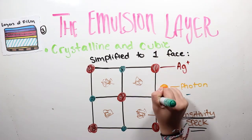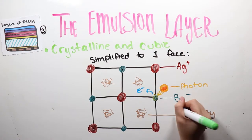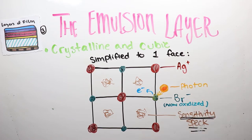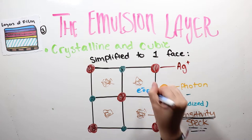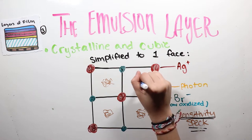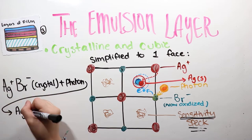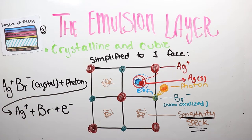When the photon hits these grains, an electron is ejected from the halide ions—in this case, the bromide—and this causes the ion to become oxidized. The free electron moves around the crystal until it reaches a sensitivity spec. The electron is then able to combine with the silver ion, reducing it to form metallic silver.